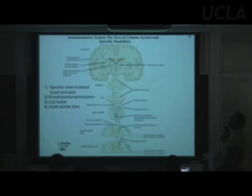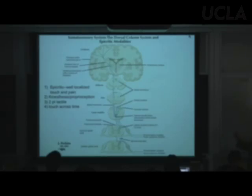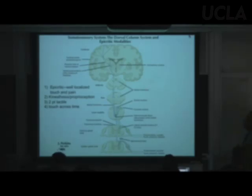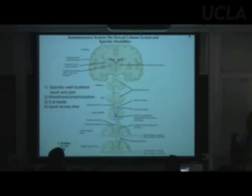First, the dorsal column system. Sensations specific to this system include epicritic touch — well-localized touch and pain — which is there and gone quickly, so you'd almost never see someone in a clinic for it.